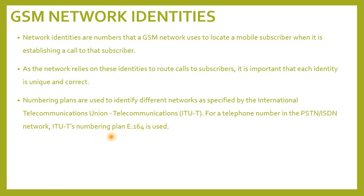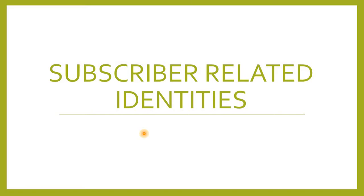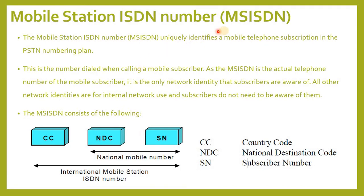Mobile Station ISDN Number — MSISDN. The MSISDN uniquely identifies a mobile telephone subscription in the PSTN numbering plan. This is the number dialed when calling a mobile subscriber. As the MSISDN is the actual telephone number of the mobile subscriber, it is the only network identity that subscribers are aware of. All other network identities are for internal network use, and subscribers do not need to be aware of them.